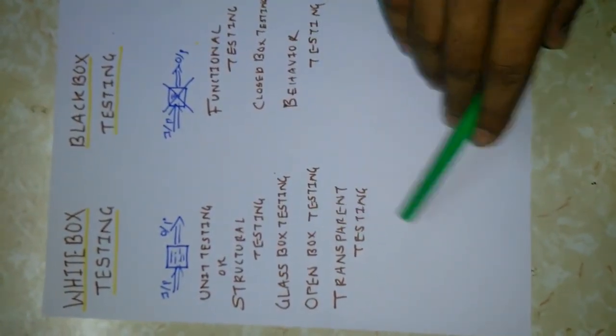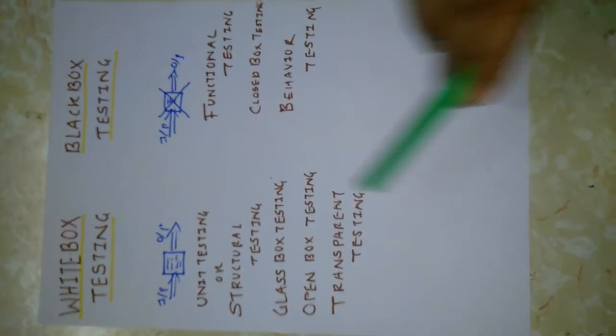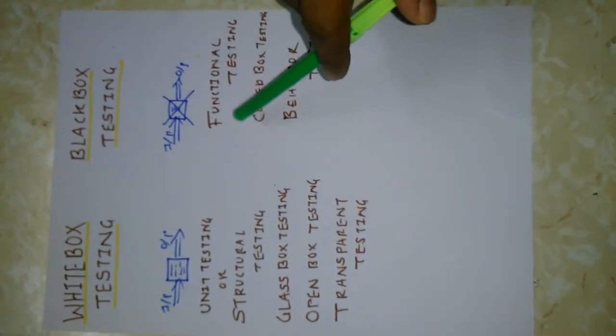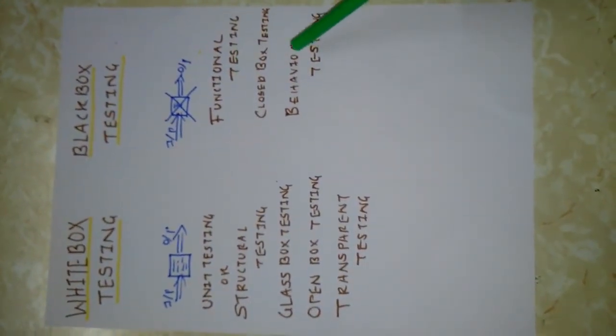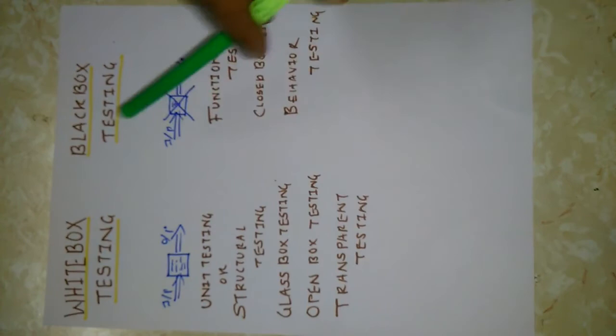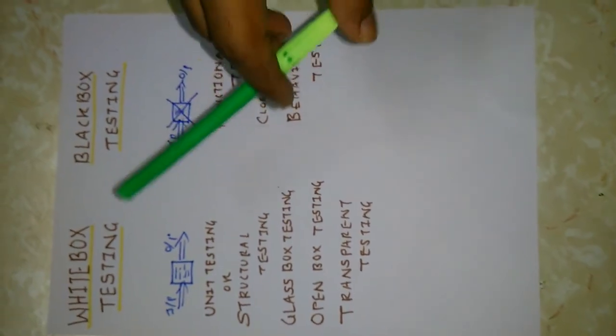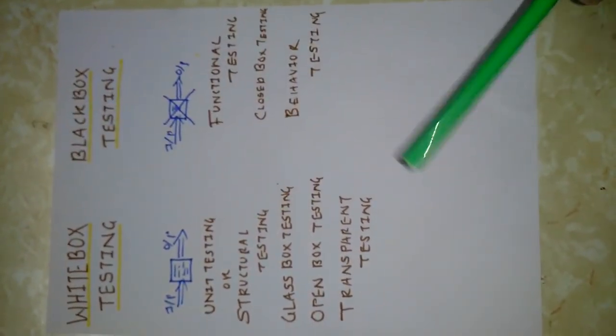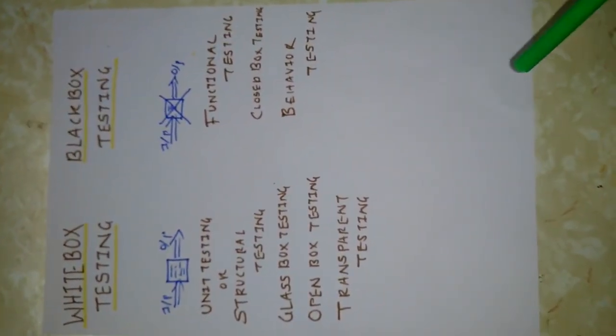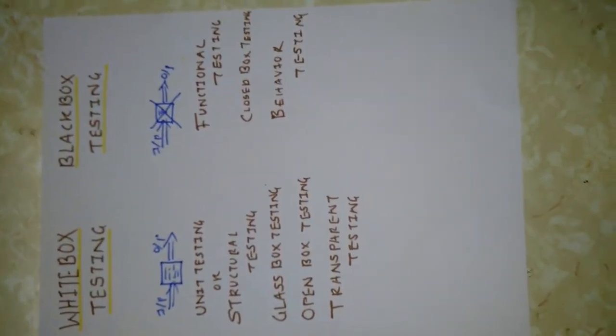White box testing is also called unit testing, structure testing, glass box testing, open box testing, or transparent testing. Black box testing is also called functional testing, closed box testing, or behavior testing. This is the main difference between white box testing and black box testing.